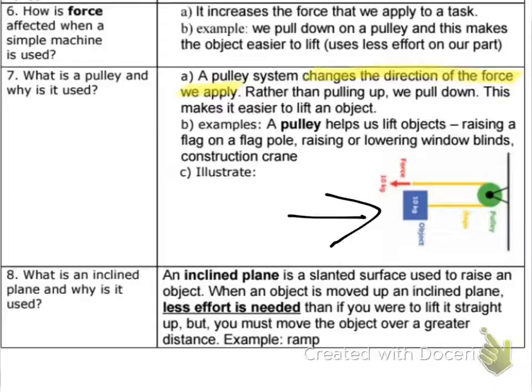Number eight, another simple machine, what is an incline plane and why is it used? It's a slanted surface used to raise an object. When an object is moved up an incline plane, less effort is needed than if you were to lift it straight up. But you must move the object over a greater distance. And really, like the video showed you, you are using the same amount of effort, but you are spreading it out over a distance. So you don't have to give the effort all at once. It's spread out so it does not seem as if you were having to give as much effort. So it seems like less effort is needed. Less effort is needed at any one time. Totally, you end up giving the same, but it's spread out over time. Instead of just lifting something straight up, you are gradually lifting it up the ramp.